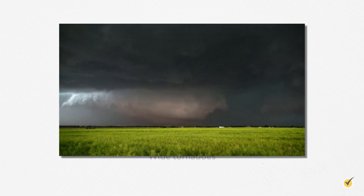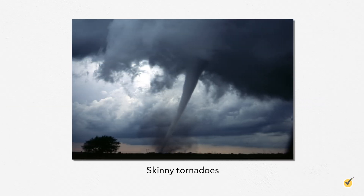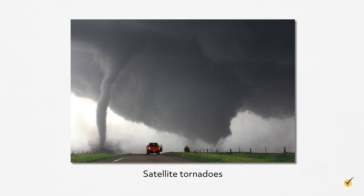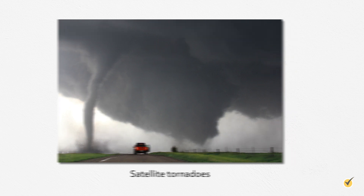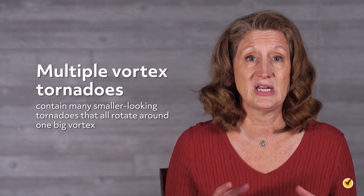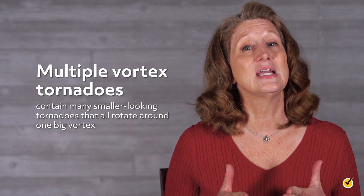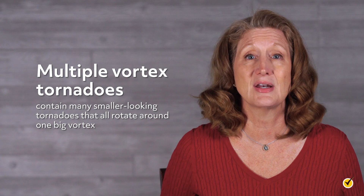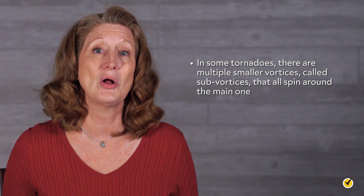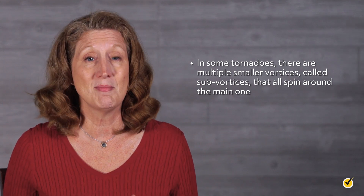Now, there are lots of different types of tornadoes: wide tornadoes, skinny tornadoes, multiple vortex tornadoes, satellite tornadoes, and waterspouts. Multiple vortex tornadoes contain many smaller tornadoes that all rotate around one big vortex. Think of the vortex as the central part of the tornado that is spinning and has upward suction. In some tornadoes, there are multiple smaller vortices called sub-vortices that all spin around the main one.